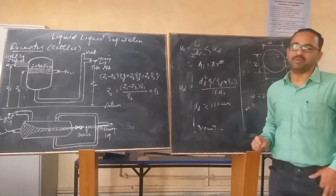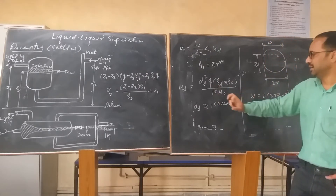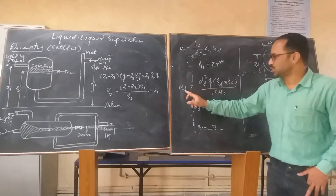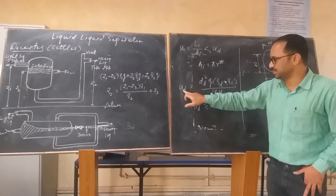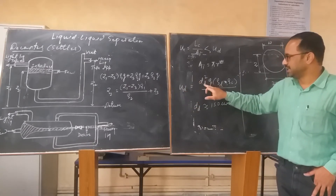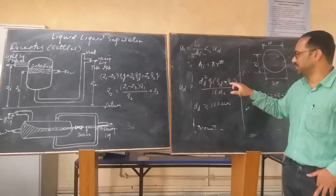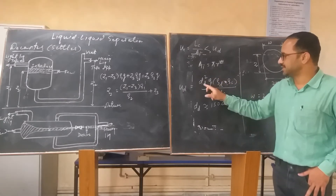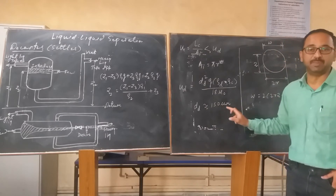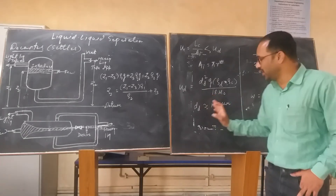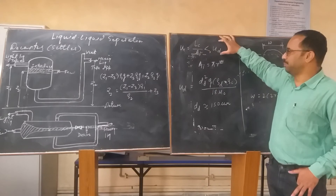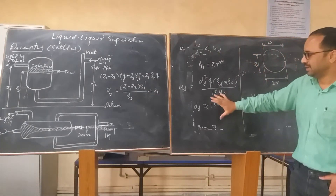The Stokes equation is used to determine the settling or dispersed-phase velocity: v_d = (d_d² · g · (ρ_d − ρ_c)) / (18 · μ_c), where d_d is the diameter of the droplet, taken as 150 micrometers as the smallest droplet size in this design. ρ_d and ρ_c are the densities of the dispersed and continuous phases respectively, and μ_c is the viscosity of the continuous phase. This ensures an appropriate velocity for determining other design parameters.